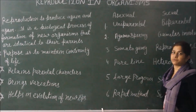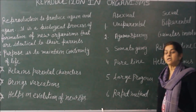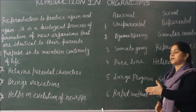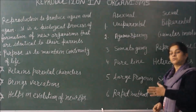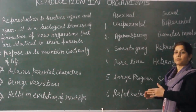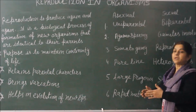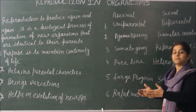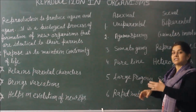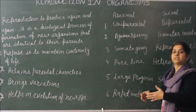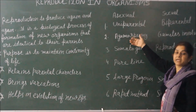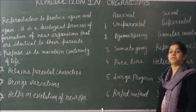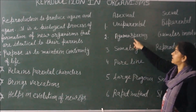Asexual reproduction is an agamospermas process, meaning there is no formation of gametes — no special sex cells are produced. It occurs directly in smaller or unicellular organisms, starting from the lower level, such as bacteria, Monera, protists, and protozoans, as well as simple organisms like Hydra, flatworms, and tapeworms, which are all lower invertebrate organisms.